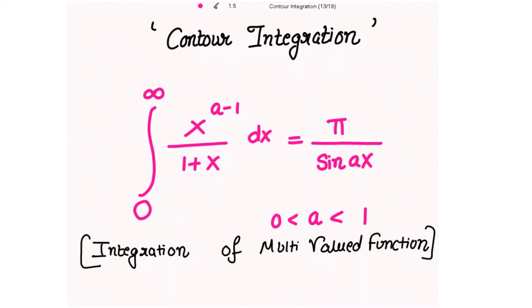Good morning. We will prove by contour integration that the integral from 0 to infinity of x^(a−1) over (1+x) dx equals π over sin(aπ), where a lies between 0 and 1, meaning a is not an integer. Checking the power a−1: as a ranges from 0 to 1, a−1 ranges from −1 to 0, so a−1 is also not an integer. This is an integration involving a multi-valued function.